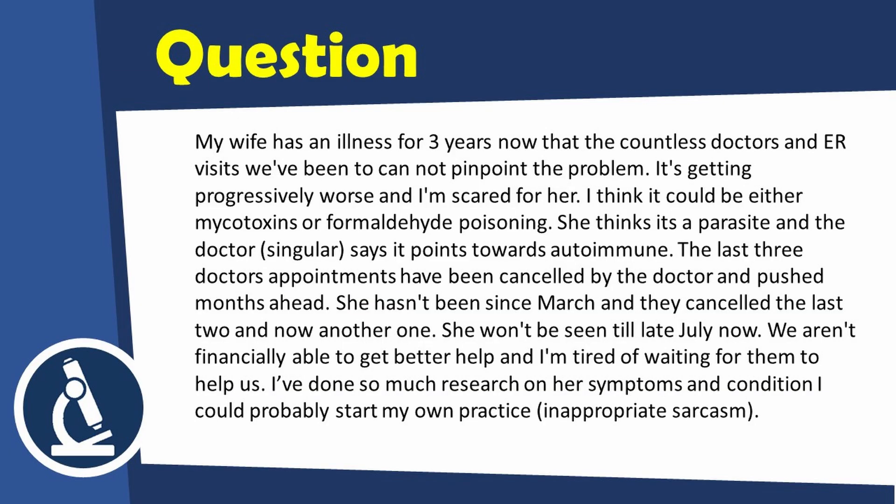So I'm going to read off the question. My wife has an illness for three years now that the countless doctors and emergency room visits we've been to cannot pinpoint the problem. It's getting progressively worse and I'm scared for her. I think it could be either mycotoxins or formaldehyde poisoning. She thinks it's a parasite and one doctor says it points towards an autoimmune disease.